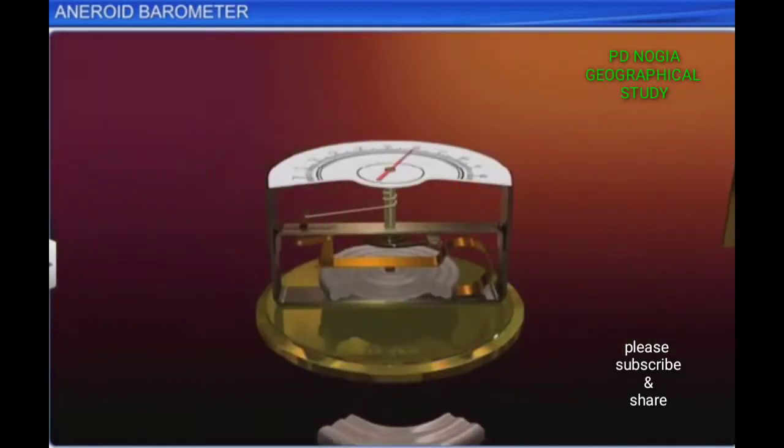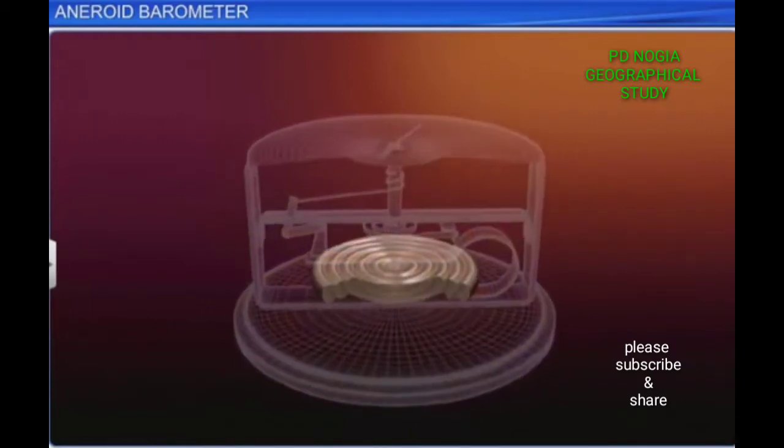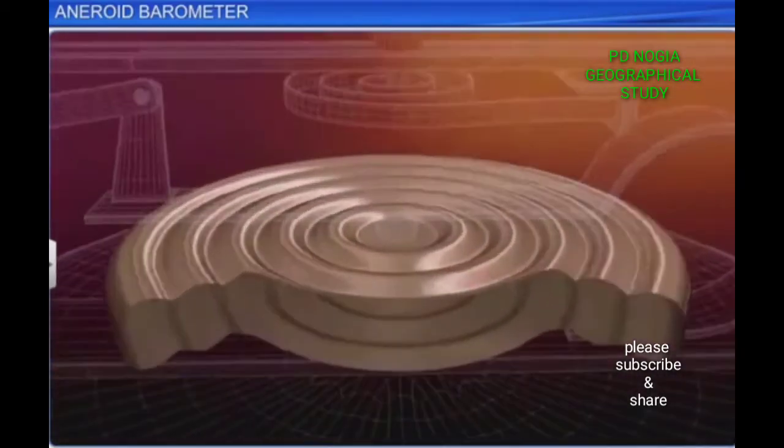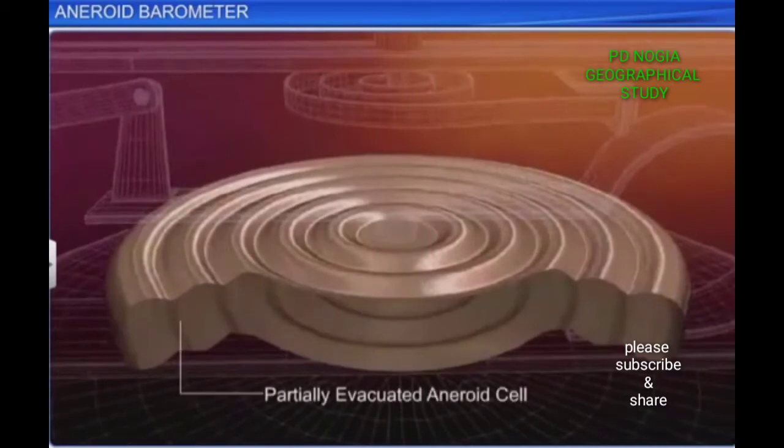Let's look at the components of an aneroid barometer. An aneroid barometer uses a small, flexible, partially evacuated metal box called an aneroid cell.